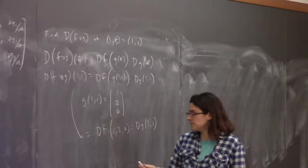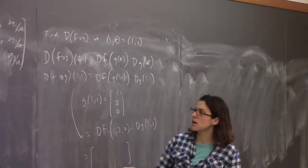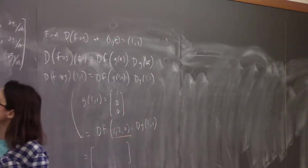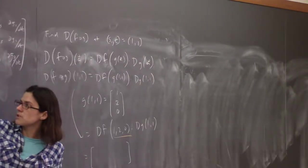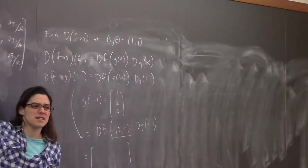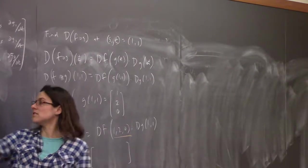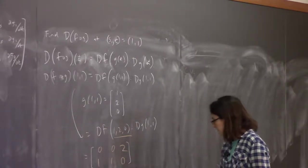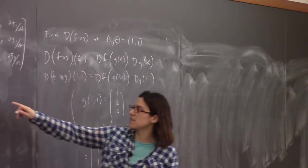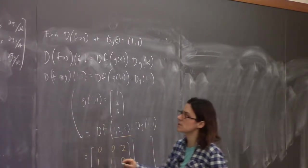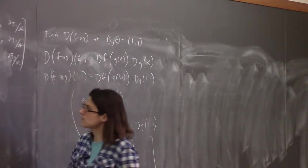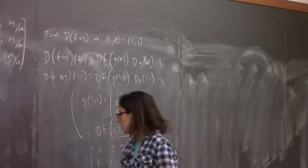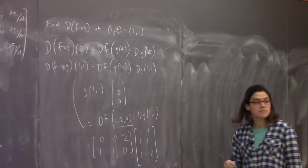Plugging x=1, y=2, z=0 into df: yz=0, xz=0, xy=2; second row is 1, 1, 0. So df at (1,2,0) = [[0, 0, 2],[1, 1, 0]]. For dg at (1,1), with s=t=1: t=1, s=1, both 1s, 2s=2, −2t=−2. So dg at (1,1) = [[1,1],[1,1],[2,−2]]. Multiplying these out gives [[4, −4],[2, 2]].